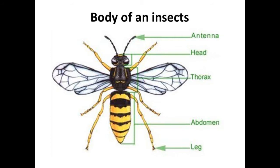Did you know? Insects form the largest group in the animal kingdom — the kingdom Animalia. Almost 75% of all animals are insects. They even outnumber humans a million to one. So can you imagine if insects took over the world? Amazing, isn't it? There are so many insects.